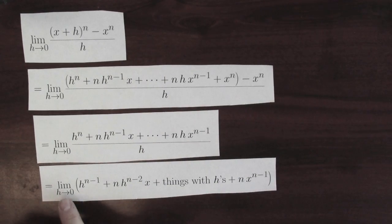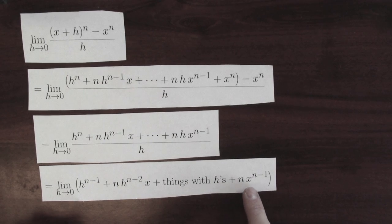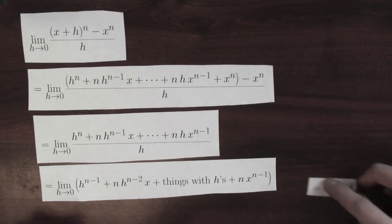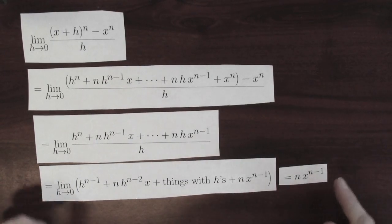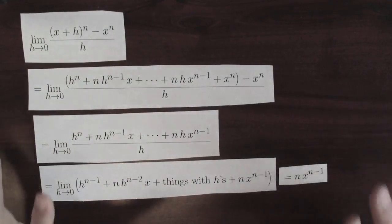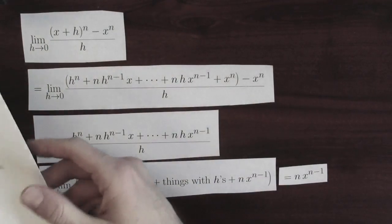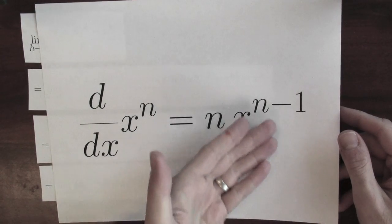And now look, this is a limit as h approaches 0, this term dies, this term dies, all of these terms with h's in them dies. The only thing that's left is this term here, n times x to the n minus 1. And that means that this entire limit is equal to n x to the n minus 1. This limit is calculated in the derivative of x to the n. So what we've really managed to do is show that the derivative of x to the n is n x to the n minus 1.